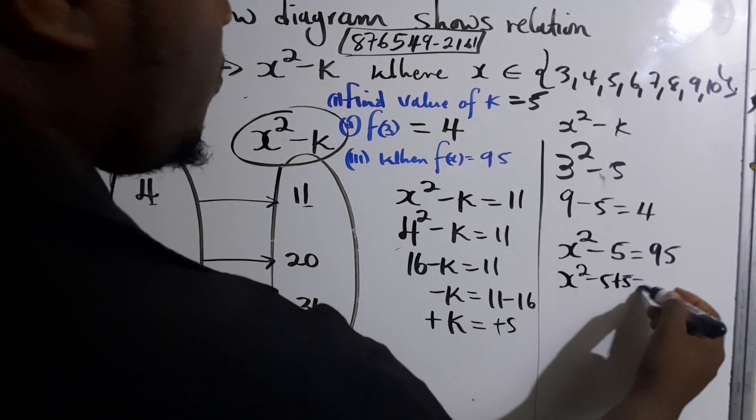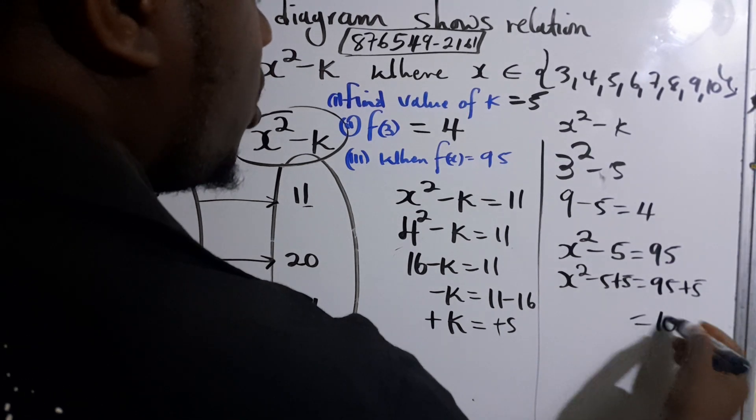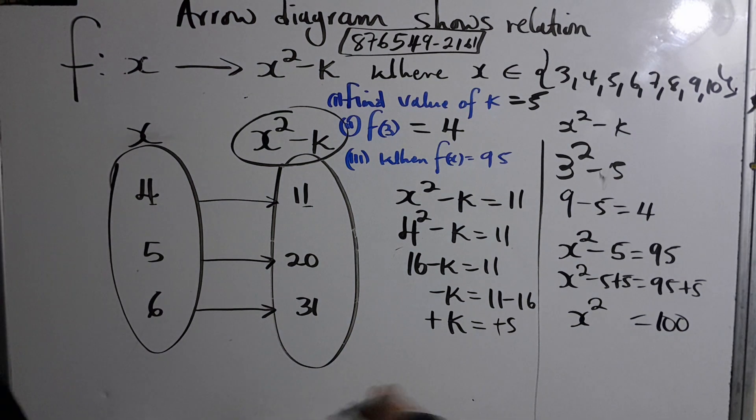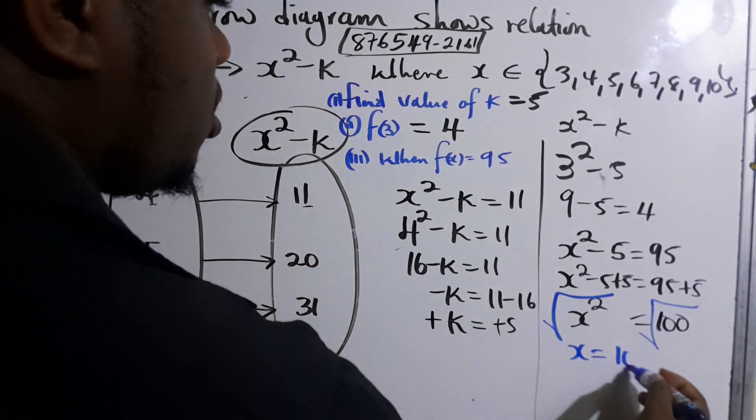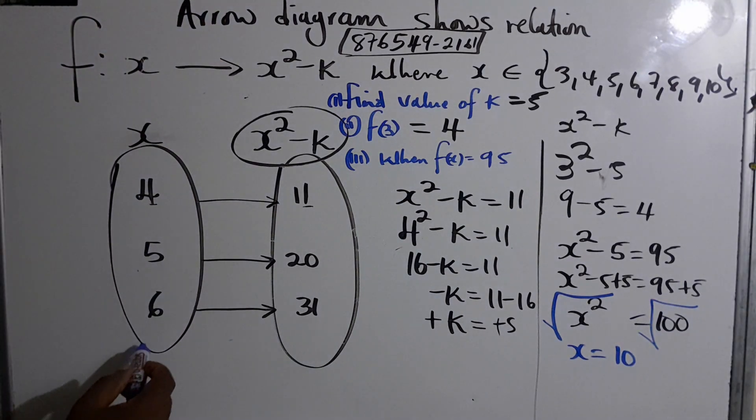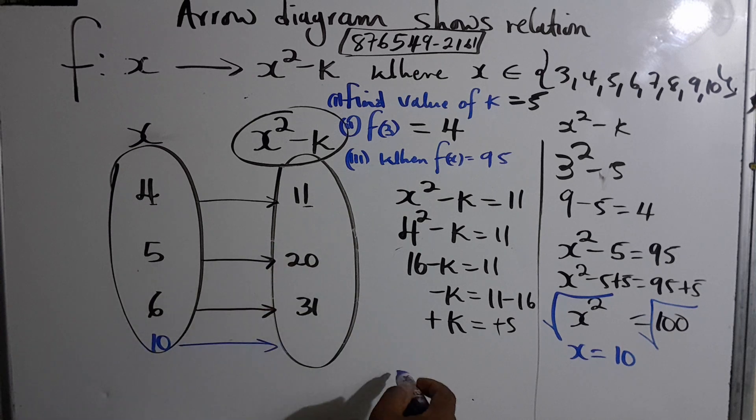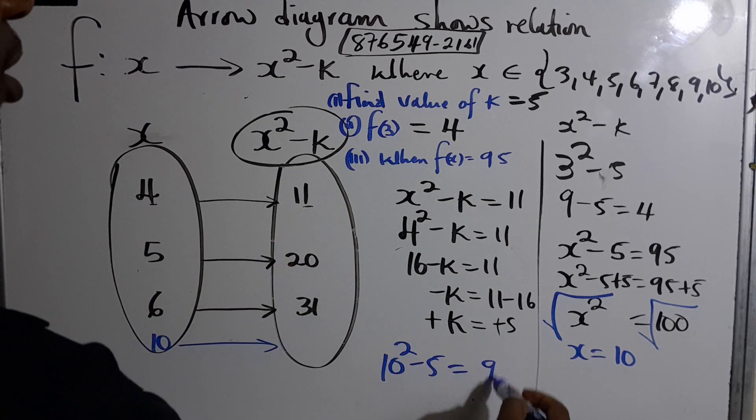95 plus 5 gives us 100. This is squared, so we take the opposite of square which is the square root. So x = 10. Over here when x is 10 we get 95. We can check it: 10 times 10 is 100 minus 5 gives us 95.